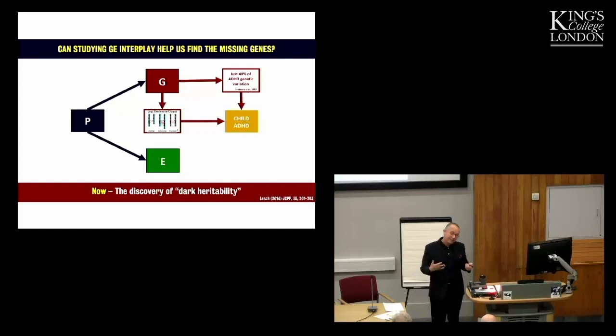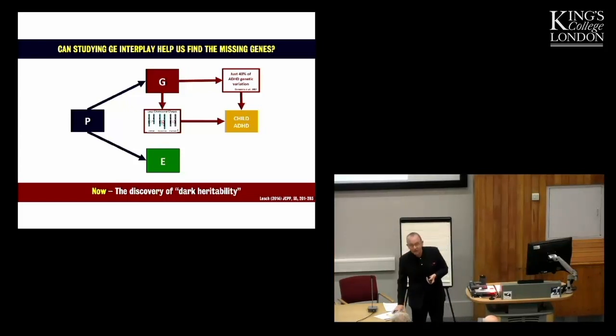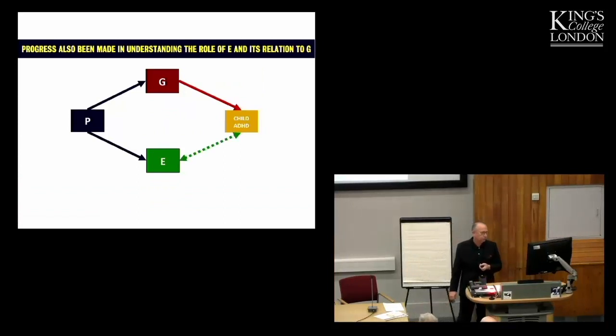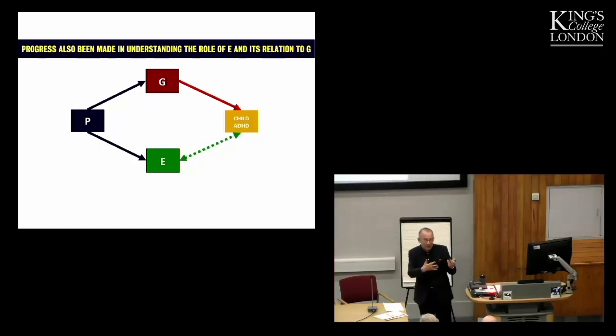So then, can looking at the relationship between environments and genetic factors, the interplay between genes and environments, help us account for this shortfall in genetic effects, metagenetic effects? And we can also say, as well as massive progress in genetic findings, there have been enormous progress in the way we understand the role of the environment.